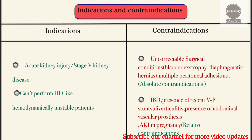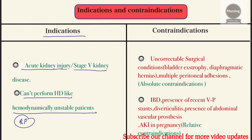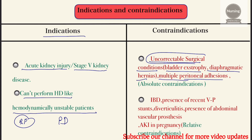The indications for peritoneal dialysis include acute kidney injury or stage 5 kidney disease, and situations where hemodialysis cannot be performed, such as in hemodynamically unstable patients with very low blood pressure. Absolute contraindications include uncorrectable surgical conditions like bladder exstrophy, diaphragmatic hernia, and multiple peritoneal radiation. Relative contraindications include IBD, presence of recent abdominal surgery, ulcerative colitis, abdominal muscular prosthetics, and AKI in pregnancy.